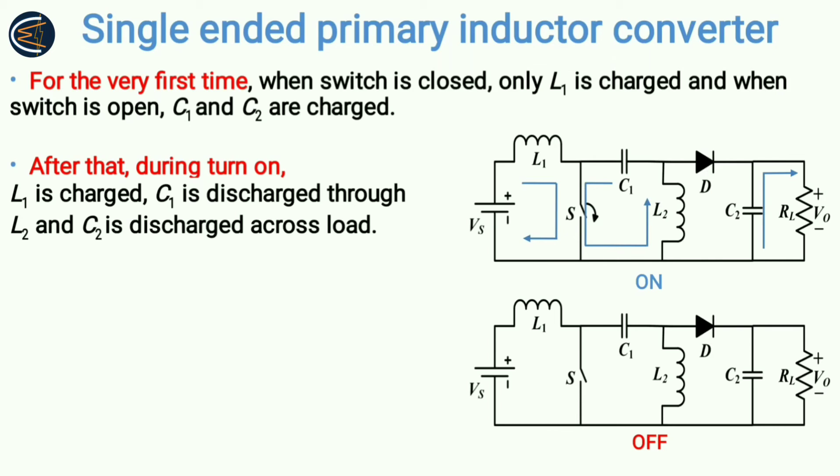After that, again when you close the switch, L1 will automatically be charged, as you can see here. And this time C1 will be discharged, because initially C1 had some charge across itself, right? C1 will not change its polarity, so in this fashion it will discharge. And as you can see, by discharging it actually charges the inductor L2. And C2 is discharged across load. We also saw that C2 was charged for the very first time, and now C2 will discharge through load.